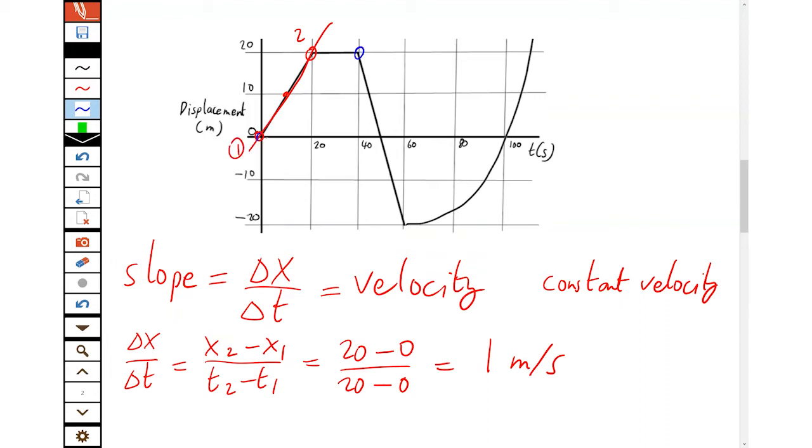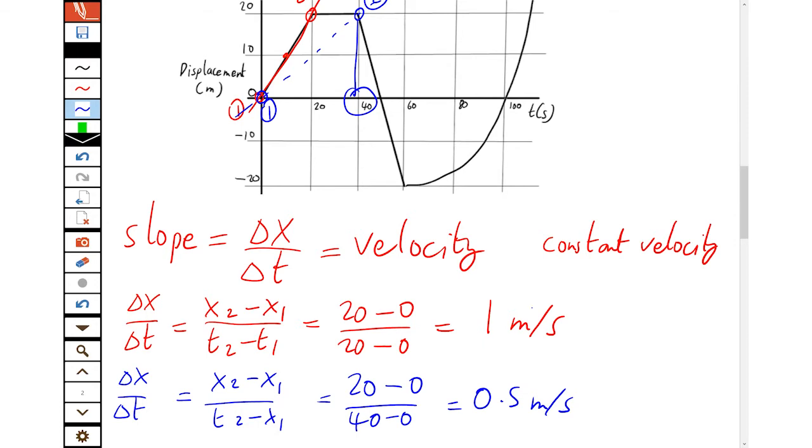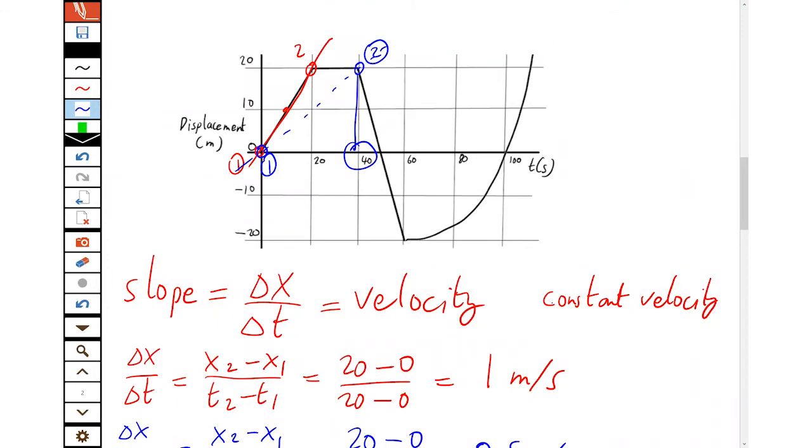But we can take it between any two points. For example, if we take it between here and here, so that's our second point, that's our first point, we'll find the average velocity, even though it stopped for a while. So in that case, the new position minus the old, the new time minus the old. So that's 20 meters minus 0 over 40 seconds minus 0. So the average velocity is now much slower. And at any point, we can see the slope of the line is the velocity.